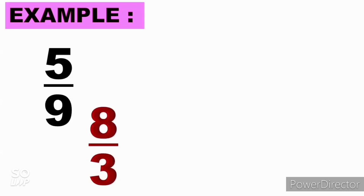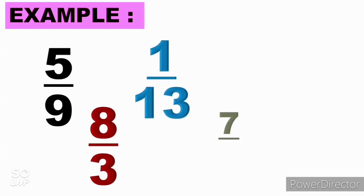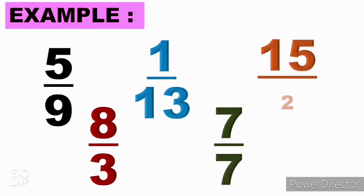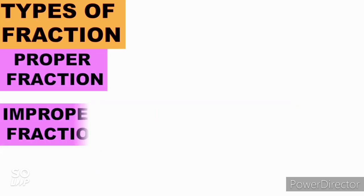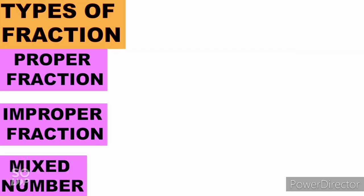We have more examples of fractions: 5 over 9, 8 over 3, 1 over 13, 7 over 7, and 15 over 2. So those are examples of fractions. We also have types of fractions: the first one is the proper fraction, the second is improper fraction, and the third is mixed number.